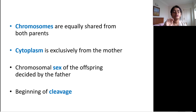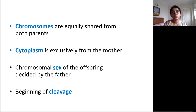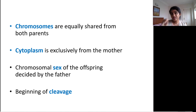In the zygote, chromosomes are equally shared from both parents, but the cytoplasm comes exclusively from the mother. A common question is why oogenesis begins before birth while spermatogenesis does not. Oogenesis begins before birth but is arrested at the prophase of the first meiotic division until puberty. This extended period is a 'getting ready' phase — the oocyte must accumulate enough cytoplasmic materials for the growing embryo, since the cytoplasm of the developing embryo comes entirely from the mother.